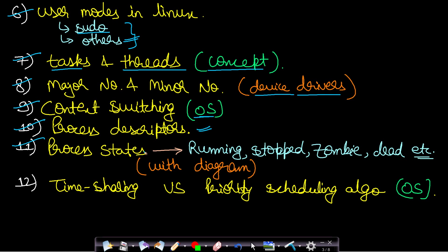The tenth topic is process states, which is very very important. You will have to study process states with a diagram along with theory — both are easily available on the internet. Some of the states are running, stopped, zombie, dead, and other such states. Read this very carefully, as this eleventh point is very very important.